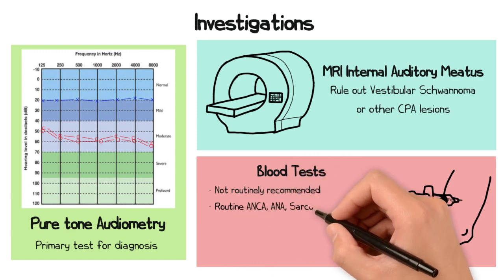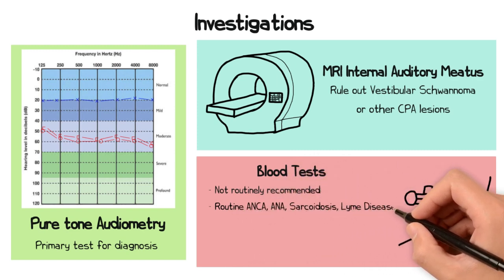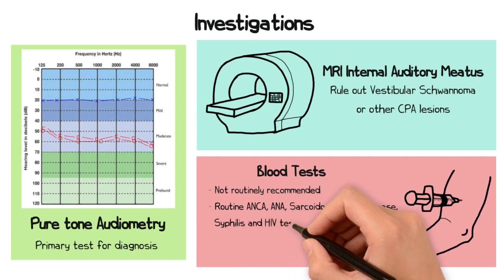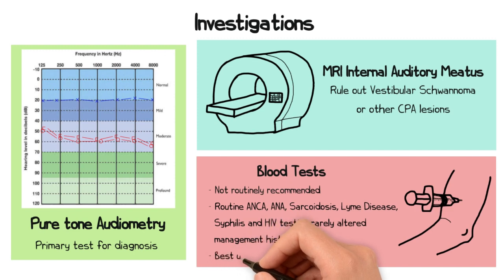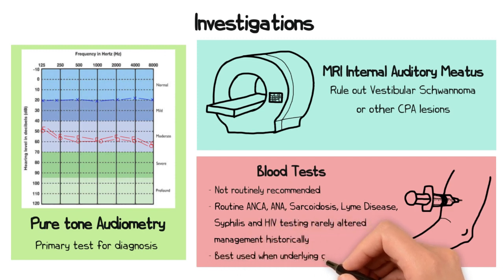Historically, a battery of tests, including ANCA, ANA, sarcoidosis screen, Lyme disease screen, syphilis and HIV testing, was often recommended, but routine testing rarely yields findings that alter management. And so blood tests are best reserved for cases where an underlying cause is suspected.